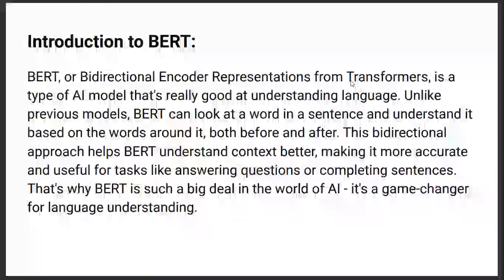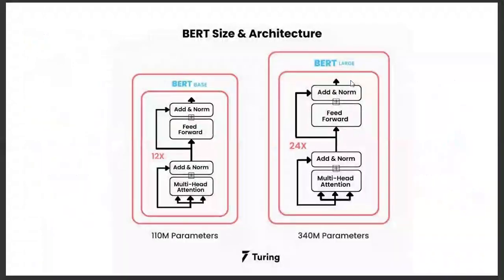This is the BERT traditional architecture. This is where you can see BERT Base and BERT Large. BERT Base has 12 layers and 110 million parameters. BERT Large has 24 layers and 340 million parameters.